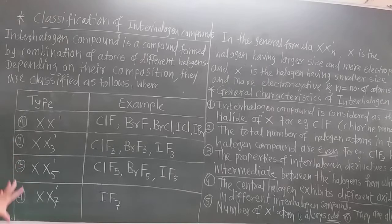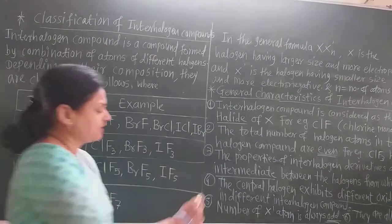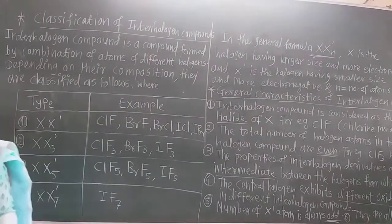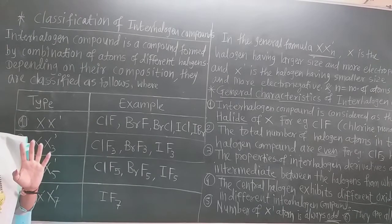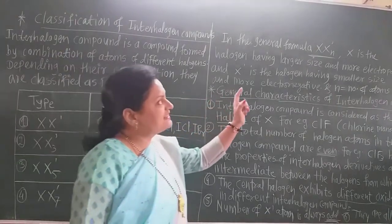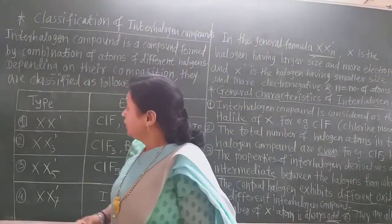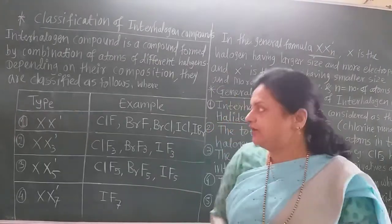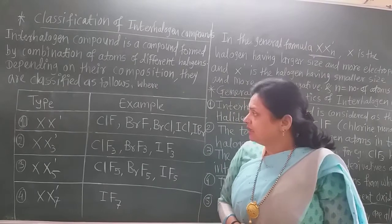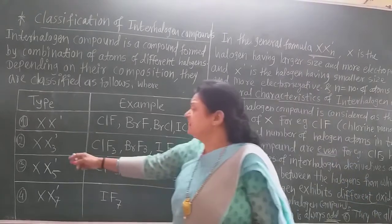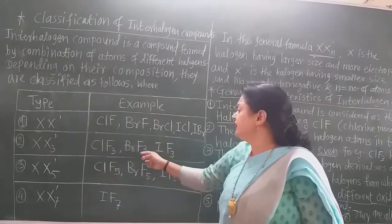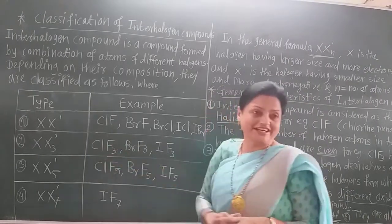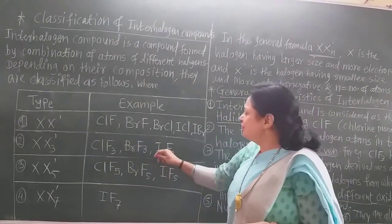The general formula is XX'n, where n is the number of more electronegative atoms, X is the electropositive halogen, and X' is the more electronegative halogen. The second type is XX'3. X' is also the more electronegative halogen — fluorine in all three examples. These are chlorine trifluoride, bromine trifluoride, and iodine trifluoride.